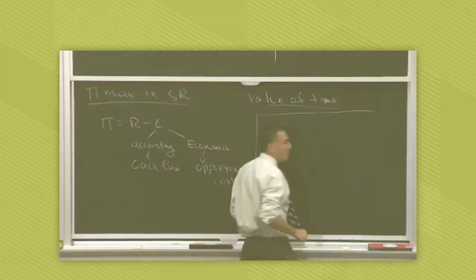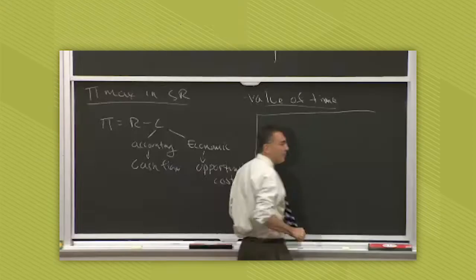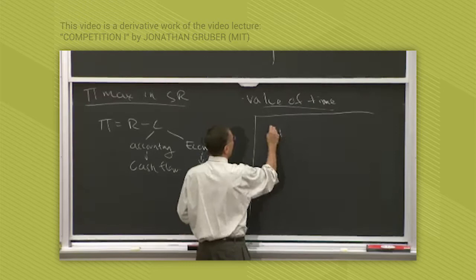How does a firm maximize profits? Well, that's easy. We say that profits is a function of quantity produced, π(q), revenues is a function of quantity produced, R(q), minus costs is a function of quantity produced, C(q).